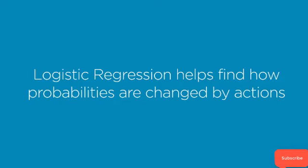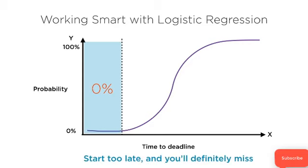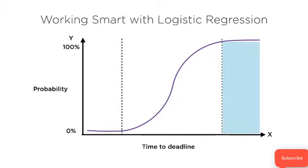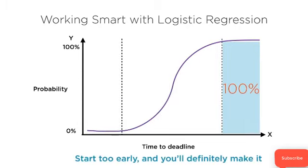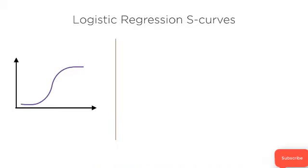Logistic regression helps find how probabilities are changed by actions. Looking at the same S curve with logistic regression in mind: if you start anywhere below the threshold highlighted here on screen, the probability of hitting your deadline is 0% — start too late and you'll definitely miss. At the other end, where time to deadline is much larger, you've started too early and you'll definitely make it. The active region at the center is where you can work smart. There's a threshold where the probability of meeting your deadline is greater than 50%, and this underlies the logistic regression classification model.